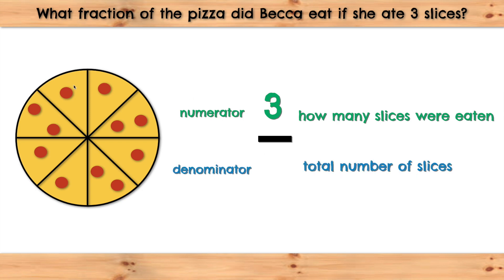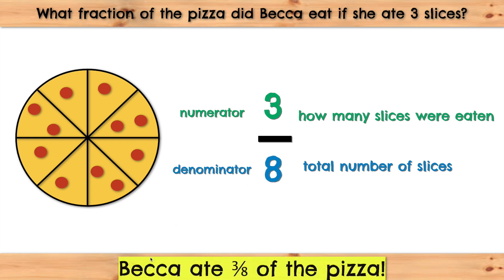Let's count: one, two, three, four, five, six, seven, eight. The denominator must be eight, so we know that Becca ate three-eighths of the pizza.